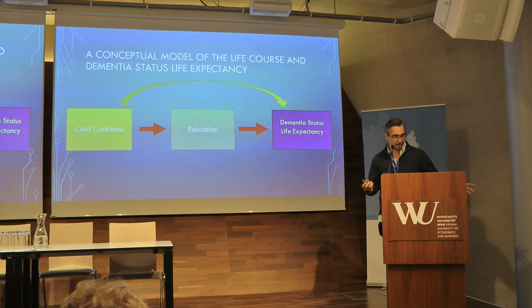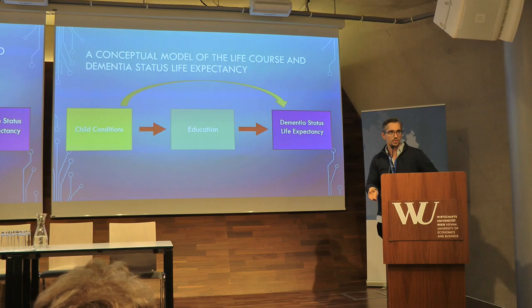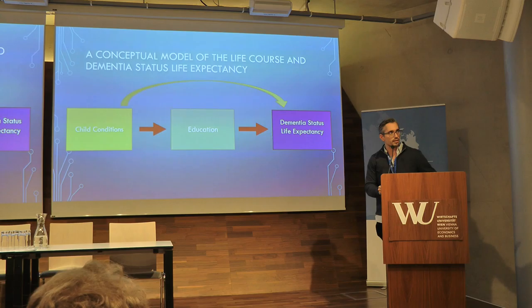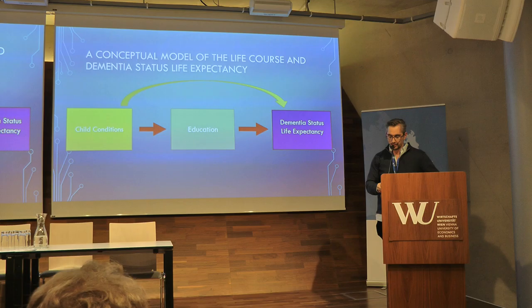Child conditions can largely affect what kind of educational outcome you have, but also have a direct effect on dementia status life expectancy. I've shown this in previous work — it's still there even when you account for education and different adult conditions.